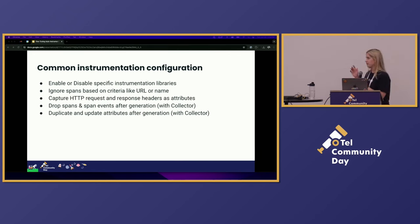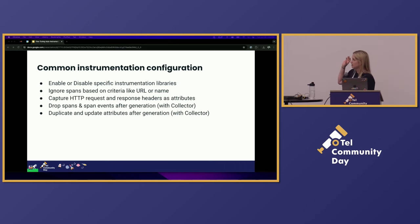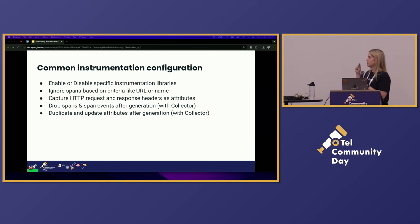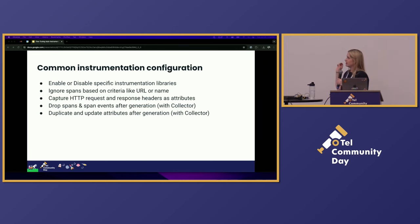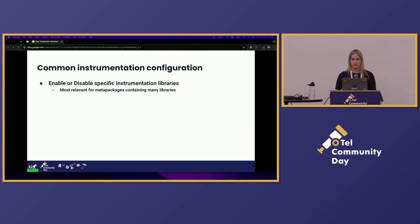We're going to look at a few common instrumentation configuration options that people think about doing. We'll go through them one at a time: turning on and off specific instrumentation libraries, spans, enriching your spans with header attributes, and some things you can do with the collector as well.